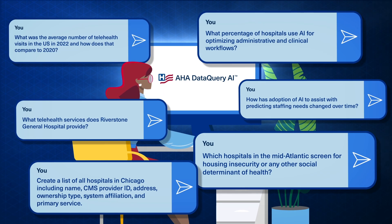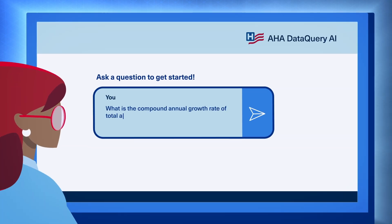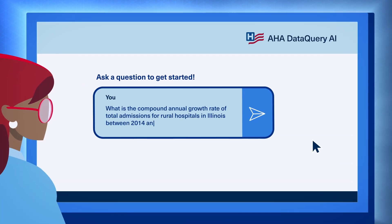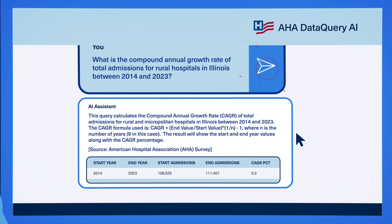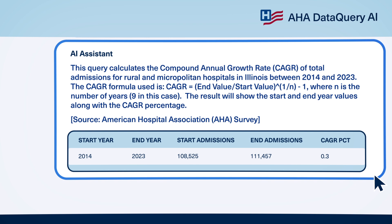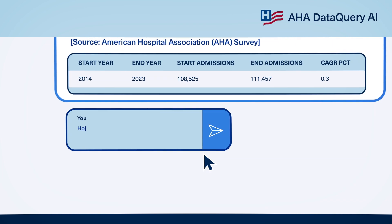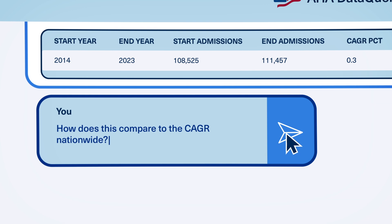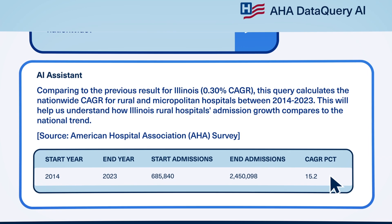With AHA Data Query AI, simply type your research question in plain English, and the platform delivers fast, accurate answers. The chat interface makes it easy to ask follow-up questions to refine your search or better understand search logic.